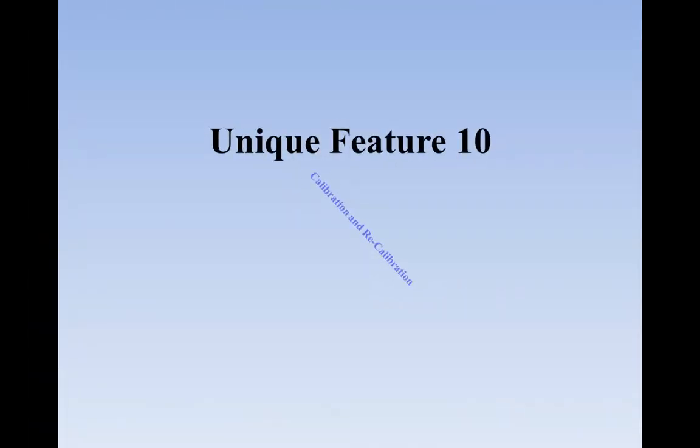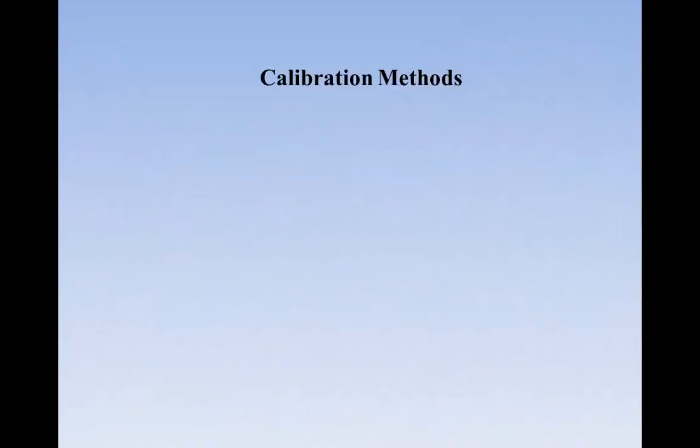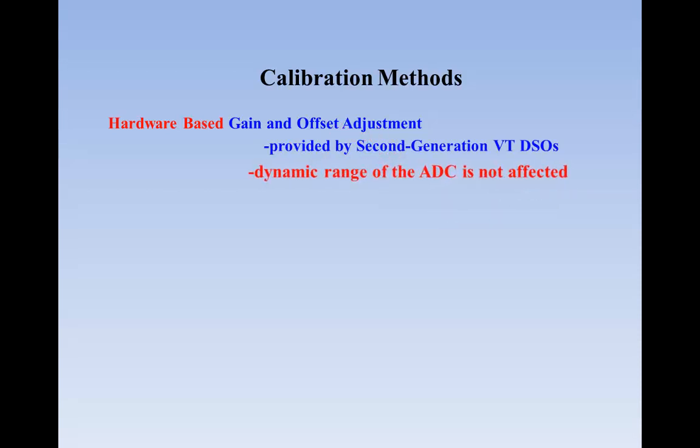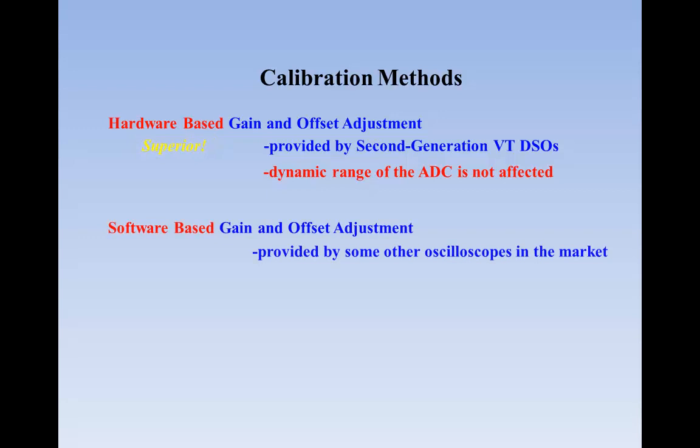Unique Feature 10: Calibration and recalibration. All the second-generation VT DSOs are individually calibrated to the specifications. This results in higher accuracy than their peers without additional cost. Some models allow the user to recalibrate them using the built-in signal generator. These models are equipped with independent gain and offset adjustment hardware. As the adjustment is done before ADC, the dynamic range of the ADC is not affected. This is superior to the software gain and offset adjustment method used by many other oscilloscopes in the market, where the adjustment is done after ADC and thus the dynamic range of the ADC is adversely affected.